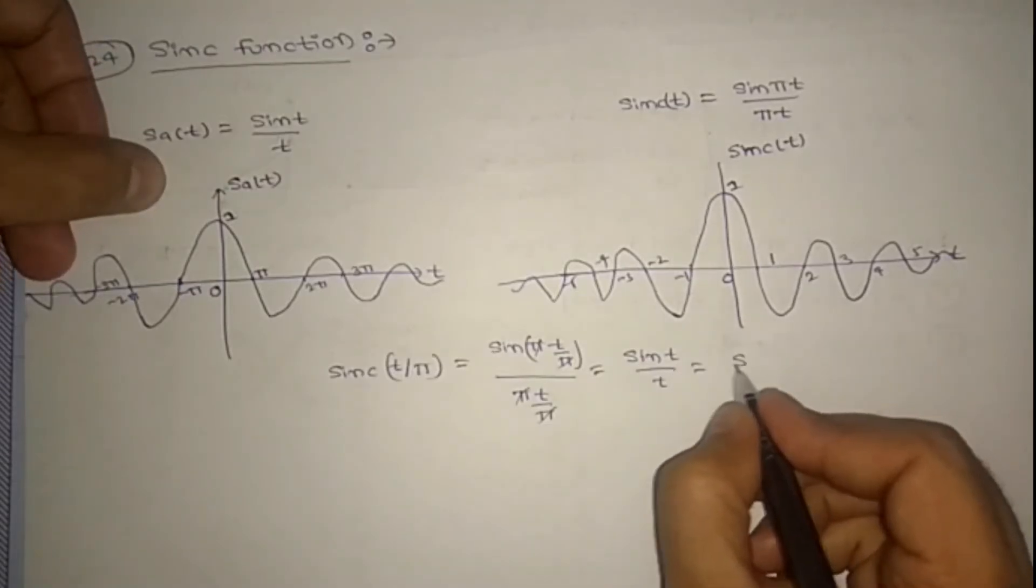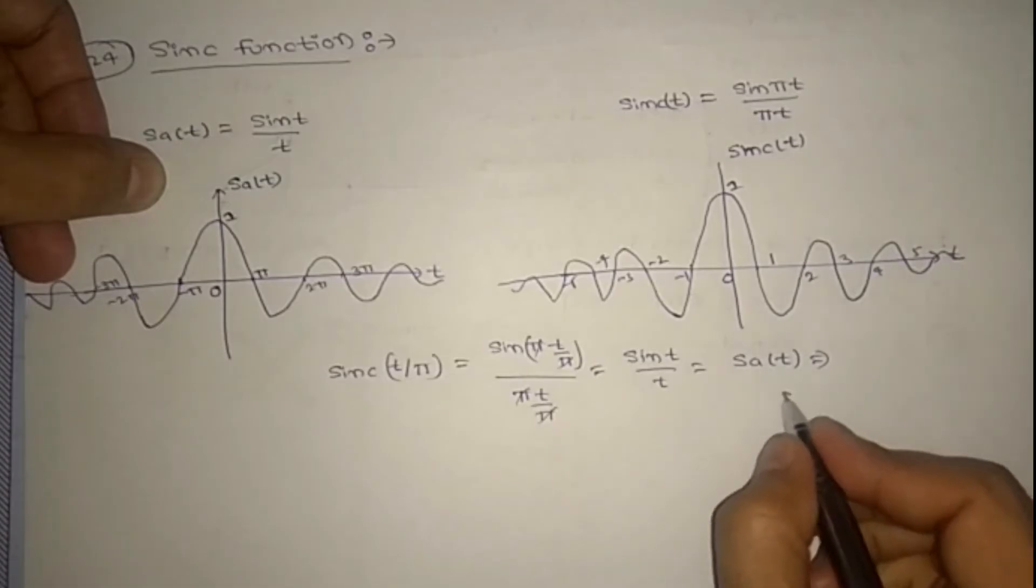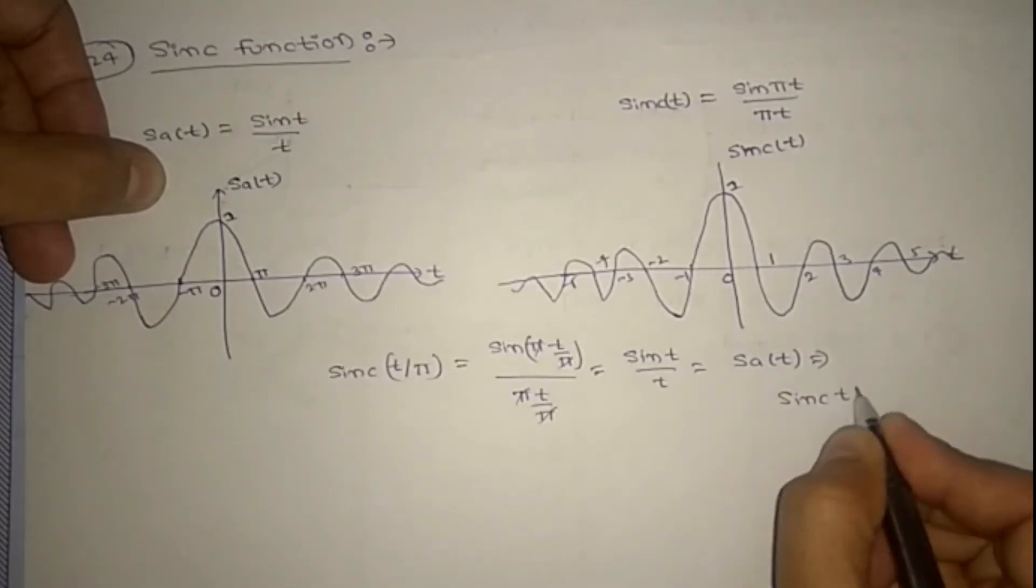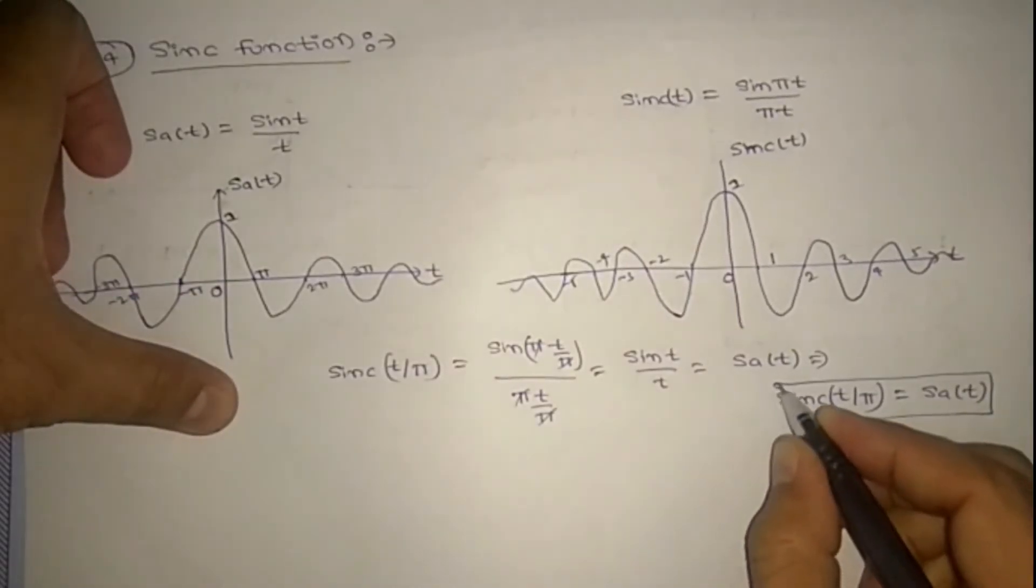Sinc t by t is equal to saw function, right? It is sa(t). So what is the relation? Sinc(t/pi) equal to sa(t).